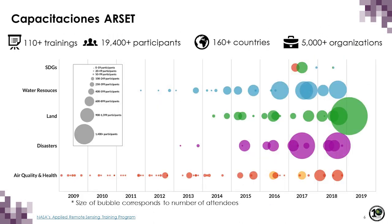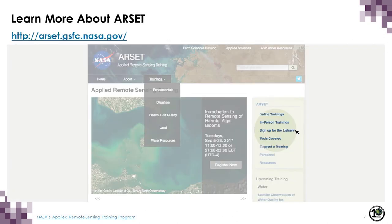RSAT has completed 10 years, having started in 2008. Since then, more than 100 trainings have been conducted with 13,000 plus participants from many organizations. The training covers disasters, water, ecosystem, and air quality. The RSAT website provides information on fundamental remote sensing trainings, as well as disasters, health, air quality, land and water resources trainings available both online and in-person.